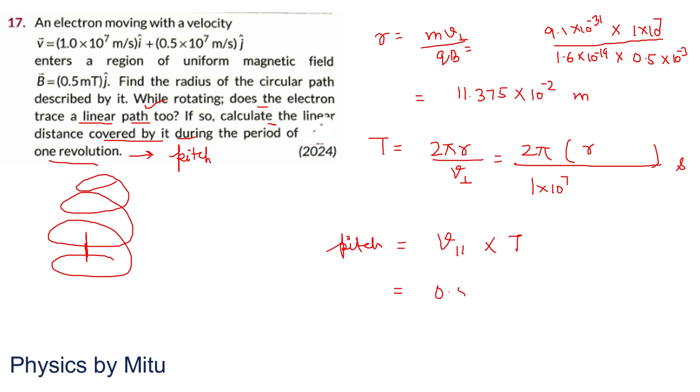V parallel is 0.5 into 10 raised to power 7. This is V parallel, which was V Y. Multiply by the time period from above. You can put it here and you will get this value. I think 71.5 times 10 raised to power minus... So you can solve it and check.